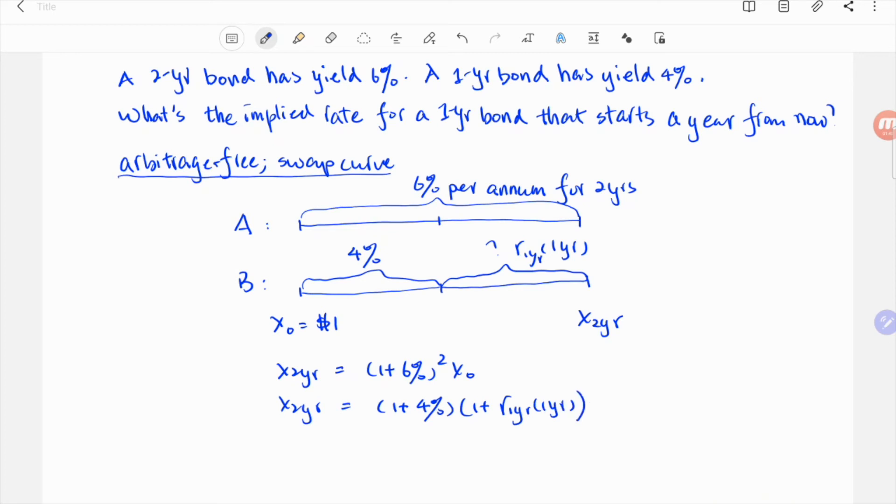Write down the compounding formula for returns for the two scenarios. We can calculate the yield of one-year bond one year from now: (1 + 6%)² divided by (1 + 4%) minus 1, which is about 8%.